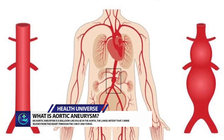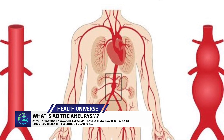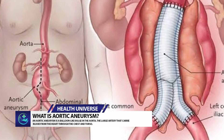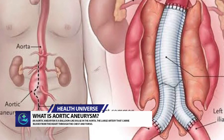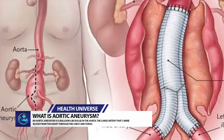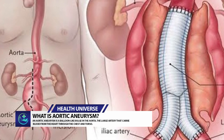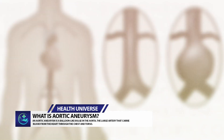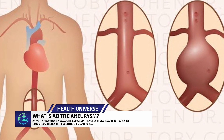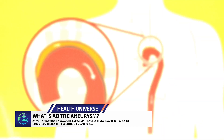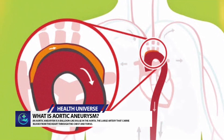What are the risk factors for aortic aneurysm? Diseases and unhealthy behaviors that damage your heart and blood vessels also increase your risk for aortic aneurysm. Smoking is the most important behavior related to aortic aneurysm. Other factors include high blood pressure, high blood cholesterol, and atherosclerosis, or hardened arteries.